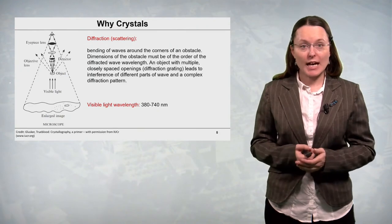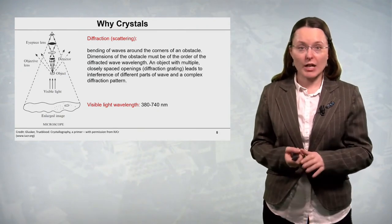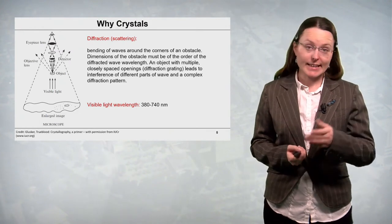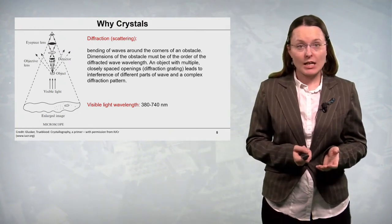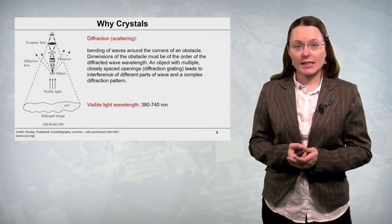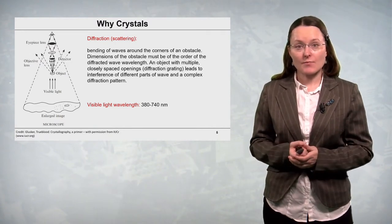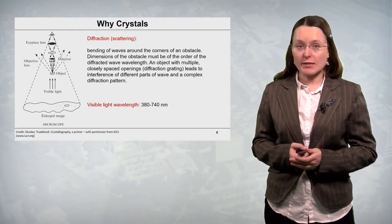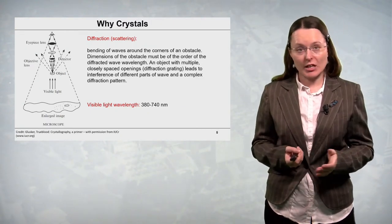In case of visible light the wavelength is from 380 to 740 nanometers. There are special objects which contain multiple closely spaced openings, the so-called diffraction gratings. And these objects lead to interference of different parts of the wave and a complex diffraction pattern.